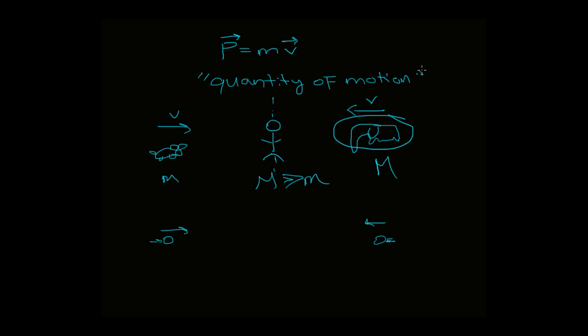It's going to be much harder to stop the elephant. This is kind of what is meant by quantity of motion. And it makes sense. You have some speed you're going and you contain some mass m. That we call momentum.